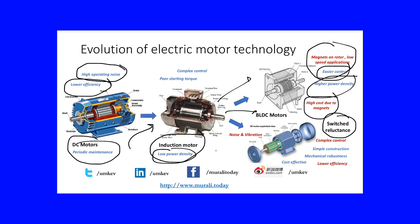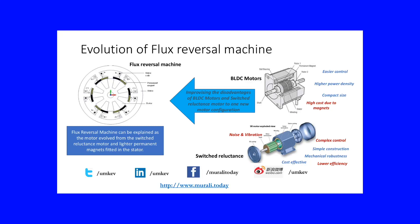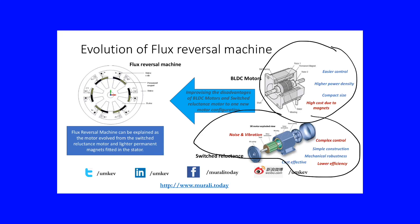Coming to the switched reluctance motor, the advantage is very simple construction and very good mechanical robustness. But the issue is lower efficiency, since it has just windings on the stator and the rotor is just a rotor with salient poles. So we still have many disadvantages even with these latest technologies. The main disadvantages we can see are high cost due to magnets, lower efficiency, and complex control.